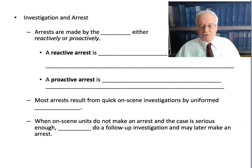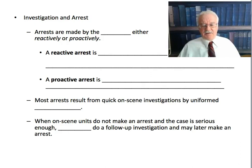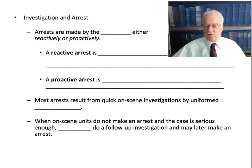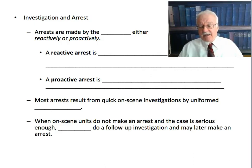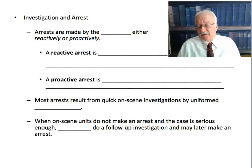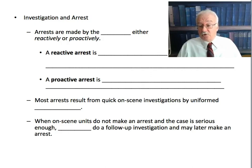Most arrests result from quick on-scene investigations by uniformed police officers. Most of the time police get to the scene, speak to a witness or victim — 'he went that way' or 'there he is' — and they lock up the person. When on-scene units do not make an arrest and the case is serious enough, detectives do a follow-up investigation and may later make an arrest. If it's a minor crime and no arrest is made, detectives aren't contacted. But for serious crimes — a murder or rape — detectives might be called directly to the scene or assigned the case the next day.